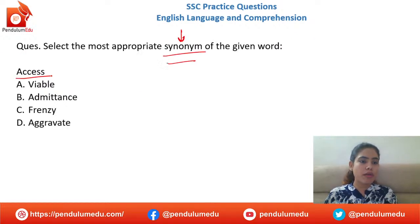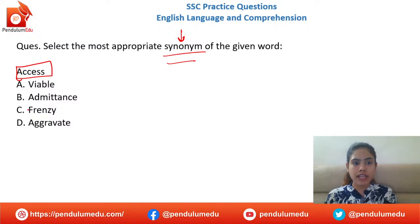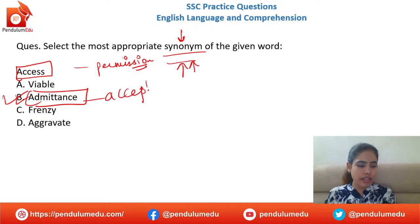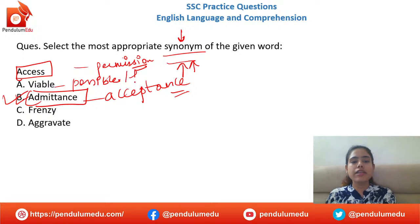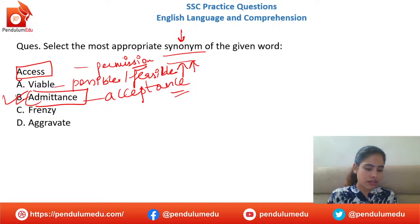Appropriate synonym of 'access': viable, admittance, frenzy, aggravate. Access means you have permission to do something — kisi cheez ke aapko permission dee hoi hai. The synonym is 'admittance.' Option B is correct. Viable means something feasible or possible — that's not the answer. Option B, admittance, is right for everyone.